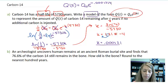An archeologist uncovers human remains at an ancient Roman burial site and finds that 76.6% of the carbon-14 still remains in the bone. So how old is it? And we're going to round it to the nearest hundred years. Well, just like we set it equal to 2 when we double it, or we set it equal to 1 half when we half it, if we have a percent, we can do the exact same thing.